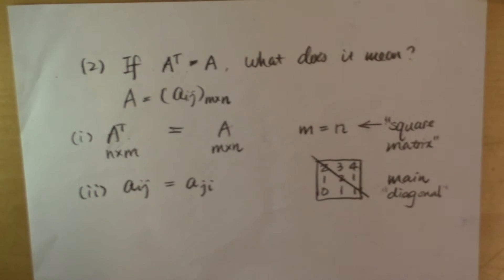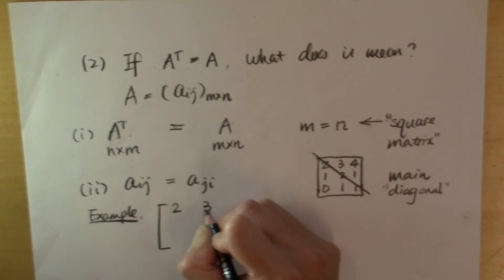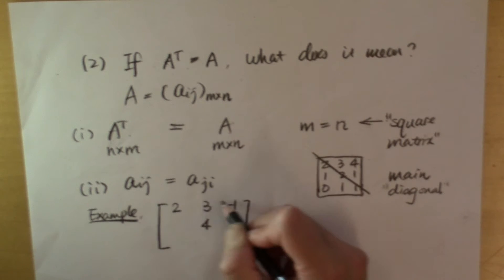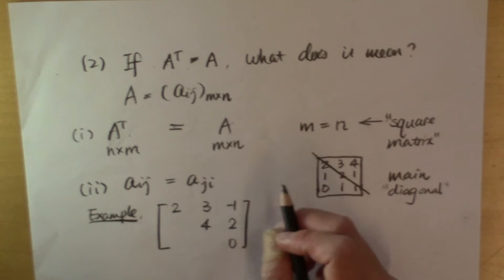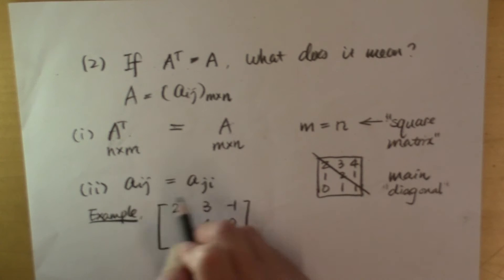Let me show you an example. Let me have this matrix: 2, 3, negative 1, and then these entries are going to be 4, 2, this is going to be 0. I'm only writing down right now this part of the matrix. Because once this part is written down, we know what the rest of the entries are going to be.